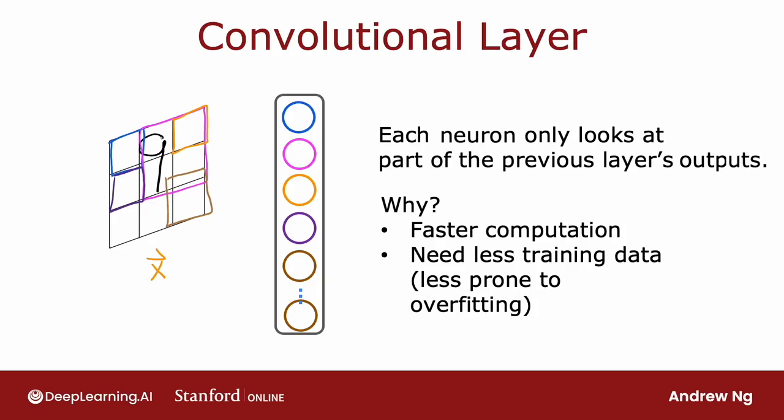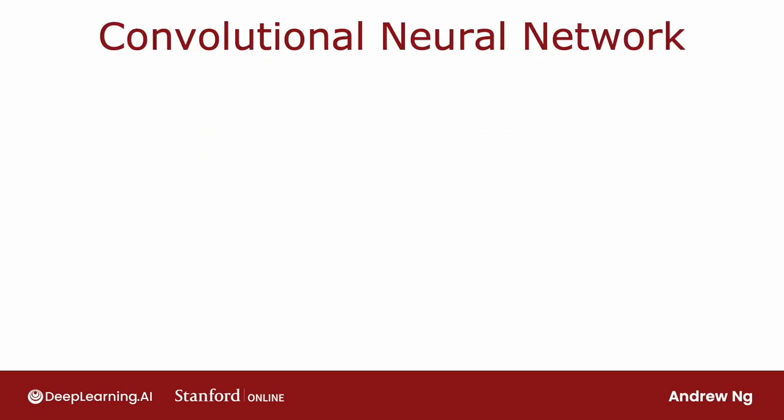And this third type of layer, where each neuron only looks at a region of the input image, is called a convolutional layer. It was a researcher, Yann LeCun, who had figured out a lot of the details of how to get convolutional layers to work and popularized their use. And if you have multiple convolutional layers in a neural network, sometimes that's called a convolutional neural network.